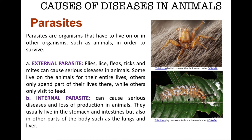Parasites can be divided into two types. First, we have external parasites. Flies, fleas, ticks, and mites can cause serious diseases in animals. Some live on the animals for their entire lives, others only spend part of their lives there, while others only visit to feed. They can result in irritation and skin damage in animals, and some parasites can also pass diseases such as red water and three-day stiff sickness between animals.